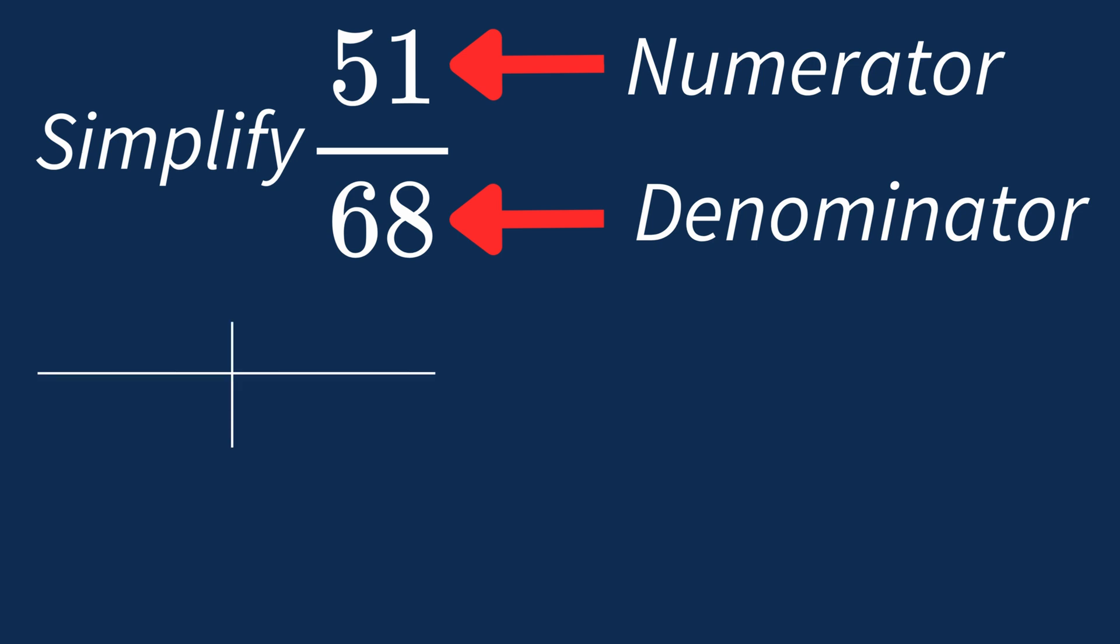First, let's list out the factors for each. For 51, the factors are 1, 3, 17, and 51. For 68, the factors are 1, 2, 4, 17, 34, and 68.